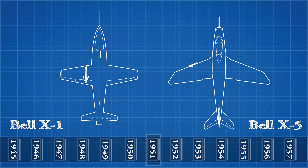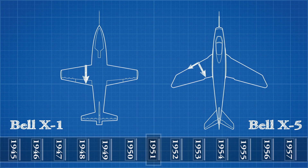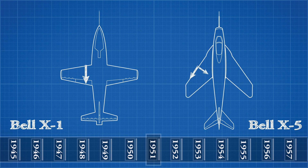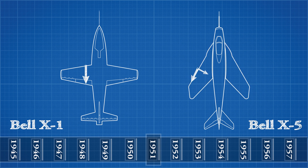By converting some of the airflow into span-wise flow, the acceleration of air over the chord is reduced, meaning the plane can fly faster before shock waves begin to form over the wing. As the plane increased in speed, the pilot could increase the sweep angle, converting a larger volume of air into span-wise flow and increasing the critical Mach number even more. This test proved that the swept wing design could delay the formation of shock waves and thus allow planes to fly faster.